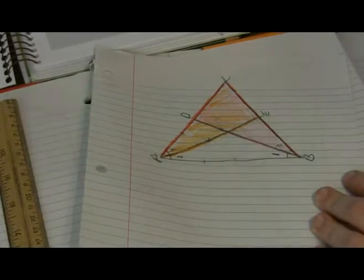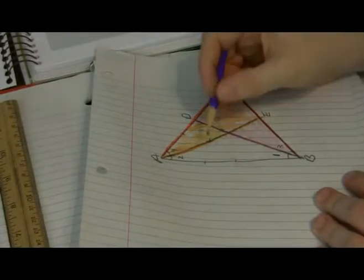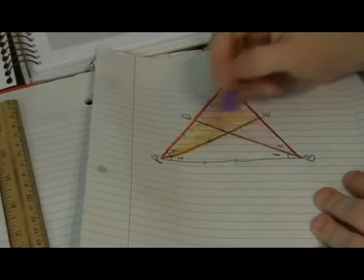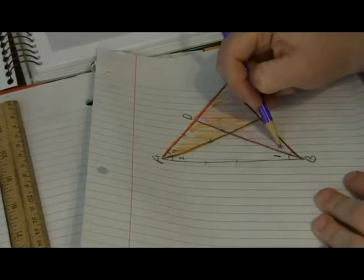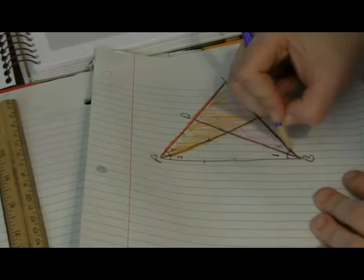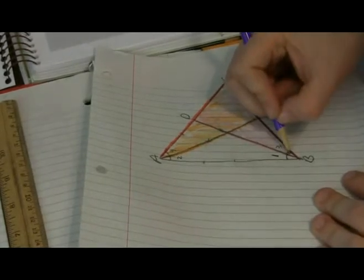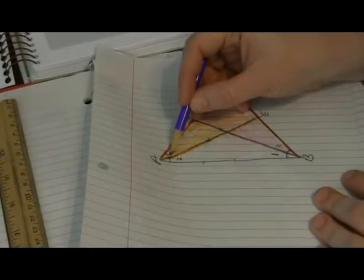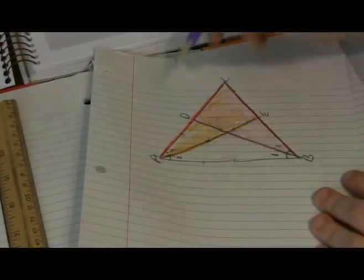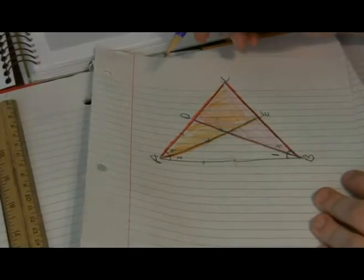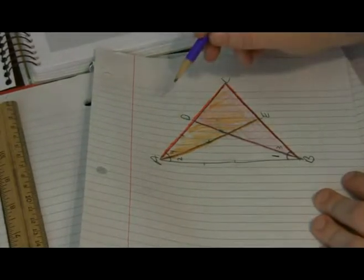Well, I can make a statement about angle three and angle four. I know that they're equal. How do I know that they're equal? Because remember originally that angle A and angle B were equal. Well, I just cut both of them in halves, and remember halves of equal angles are equal.